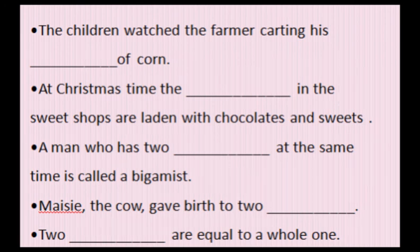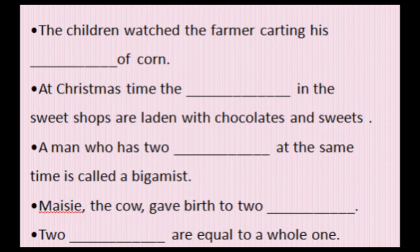Sixth sentence: 'The children watched the farmer cutting his dash of corn.' Cutting means to carry or bundle something. The plural noun here is sheaves — S-H-E-A-V-E-S. Sheaves means bundles, like a grain bundle. Corn means makai. So the answer is sheaves of corn.